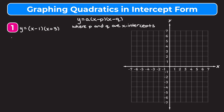What I like to do first is plot the x-intercepts. To plot the x-intercepts I have to understand what p and q are. So p is going to be positive one because we have x minus one, and q is going to be negative three because we have x plus three. You pretty much just switch the signs that are in front of those numbers in the parentheses. So those are our x-intercepts: one and negative three.